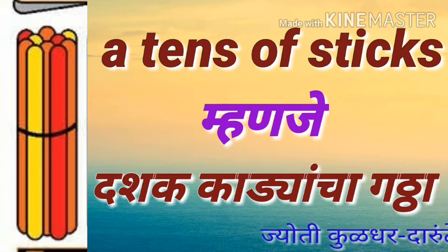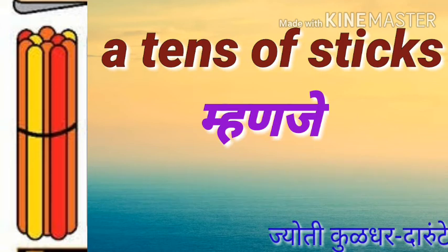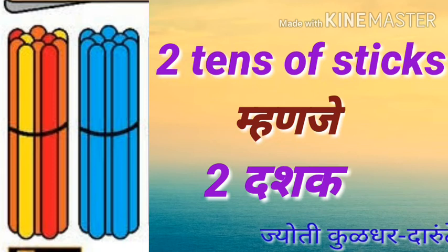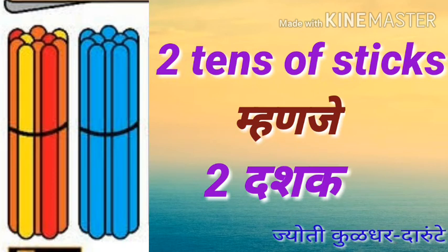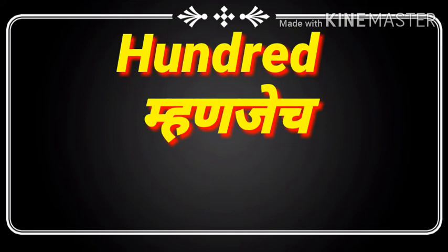10 - a tens of sticks, manje ek dashak kandiyan cha gatha. He tumhi maag chikla ahat. Aata next picture vaga - kiti ahit dashak kandiya? 2 - manje 2 tens of sticks, manje 2 dashak. So in this way, in last standard we have seen the concept of tens. Magi liye teth aapan dashak hi sankalpana baghitli aahe. Today we will learn a new concept, that is 100.